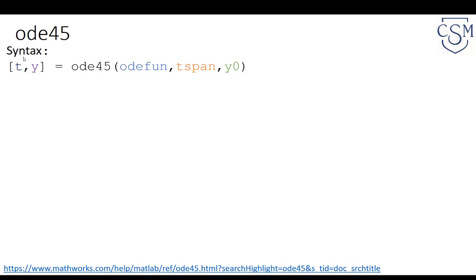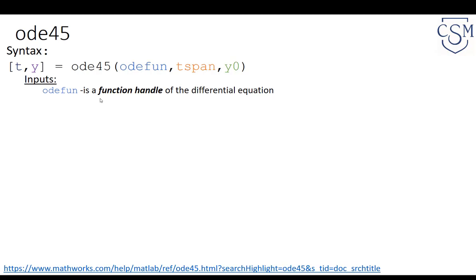We should expect two outputs if requested. The first output is T — the time points at which the function is evaluated — and Y. What we pass to this function is ODEFUN, TSPAN, and Y0. ODEFUN is a function handle; it doesn't have to be called ODEFUN, it's just the first argument passed to ODE45. The solver assumes it's a function handle of the differential equation you're asking it to solve.